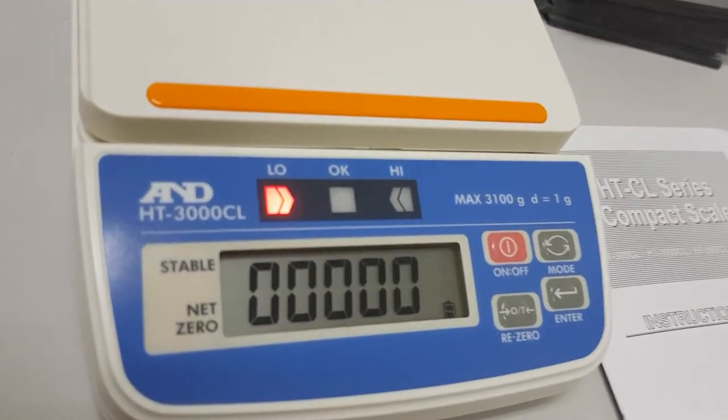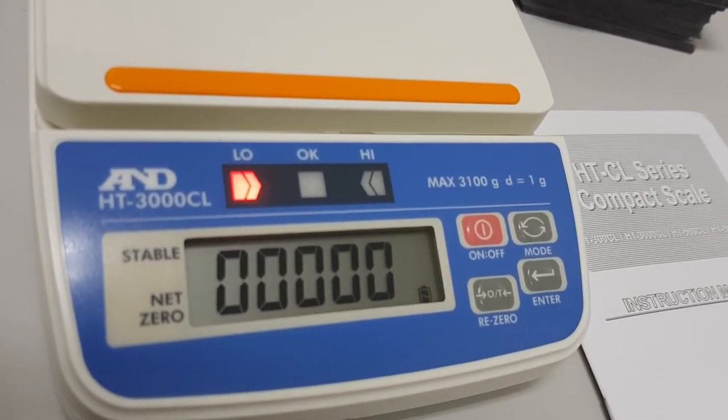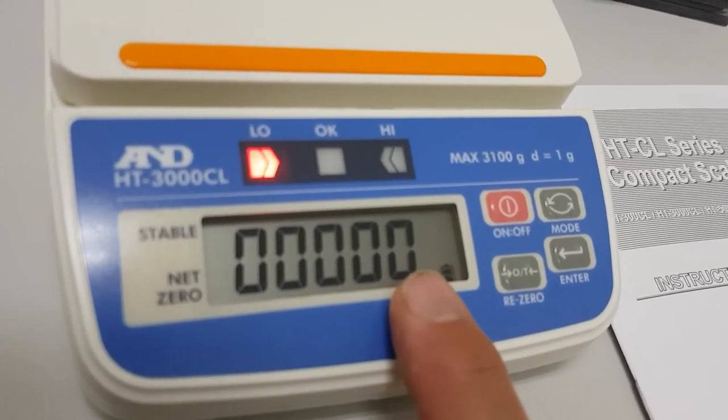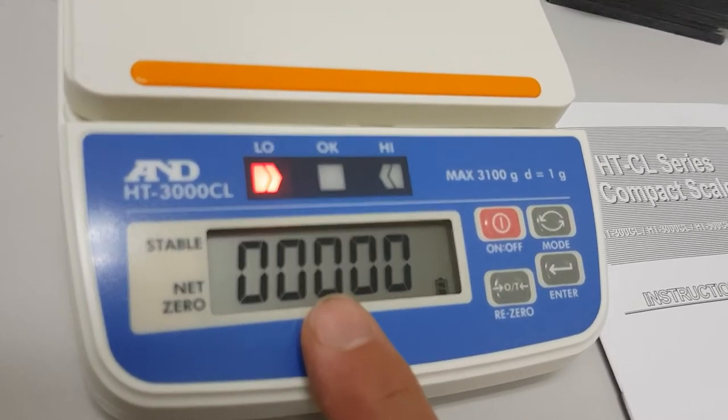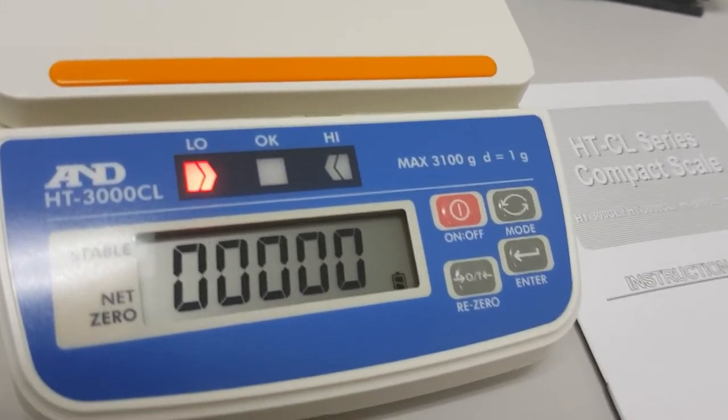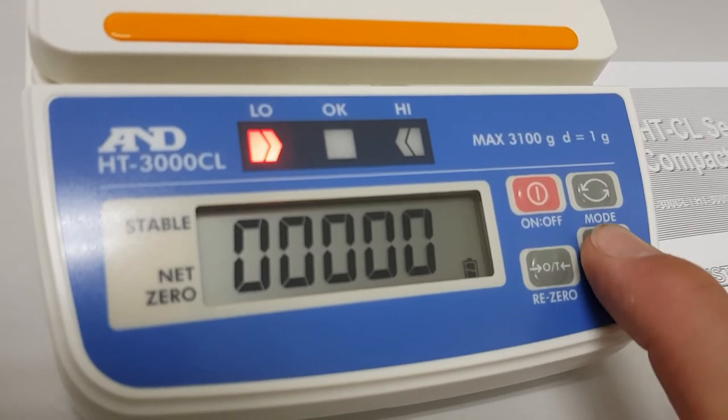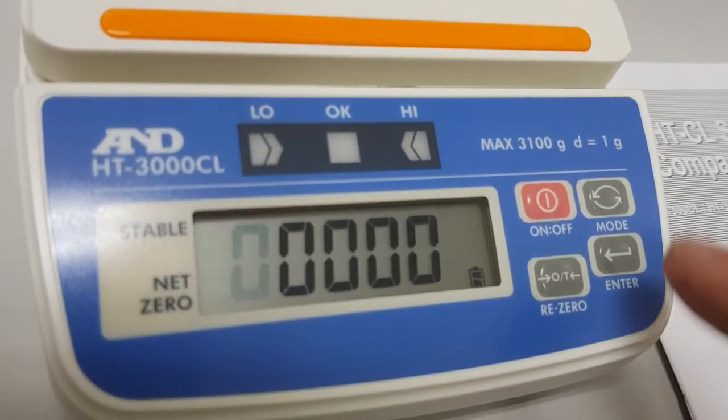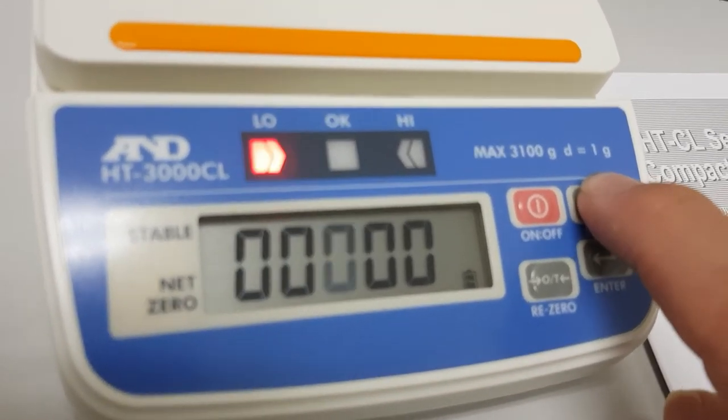At the moment there's nothing there so it's all zeros. Because this is a one gram scale, this is the ones, tens, hundreds and thousands column essentially. If we want to start changing the values we'll press enter, one of the digits will start flashing. We press mode, it moves it across.